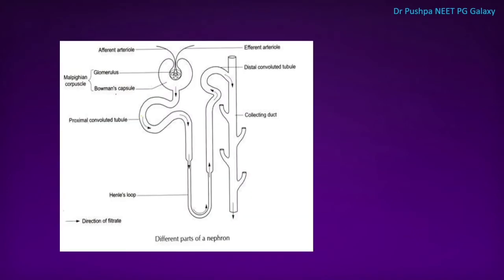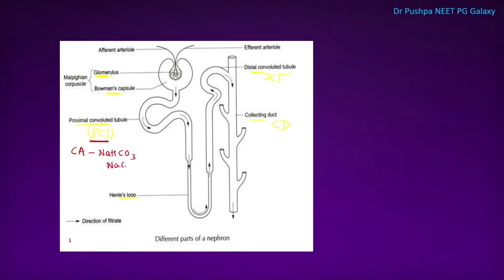This is the structure of the nephron. This is the glomerulus and Bowman's capsule, this is the proximal convoluted tubule (PCT), this is the loop of Henle, this is the DCT, and this is the collecting duct. In the PCT, there is an enzyme called carbonic anhydrase, and there is reabsorption of sodium bicarbonate and sodium chloride.